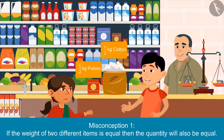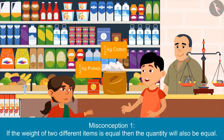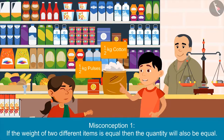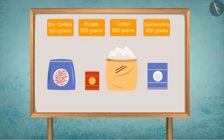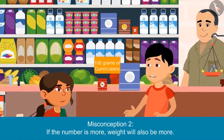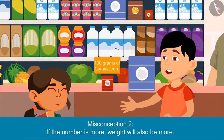It is not necessary that if the weight of two objects is the same, the quantity will also be the same. See, the weight of these four items is the same but their quantities are different. You had just picked a packet of 100 grams of jeera and I picked a packet of one kg of suji.